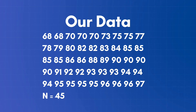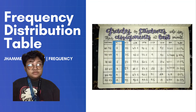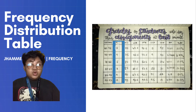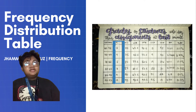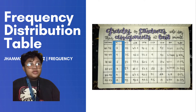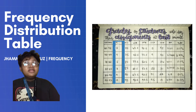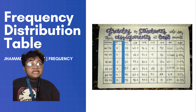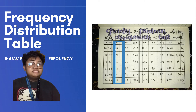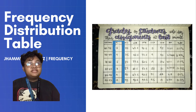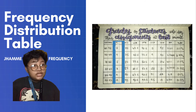After we got the classes column, we can now proceed to the frequency. In gathering frequency, we will be needing the data again, and we also look at the classes. The first class in our table is 68 to 72, so we need to find the numbers in our data that are in the range from 68 to 72. In our data, we have 5 frequencies in the first class. You will do the same for the others until you get all the frequencies.